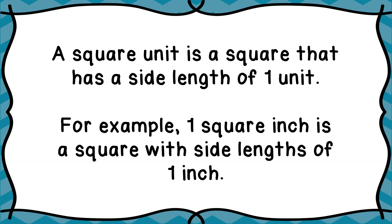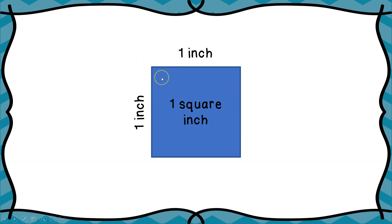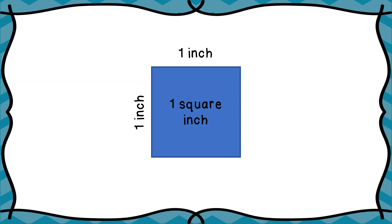Let me show you what that looks like. You see here — and obviously this is not to scale, this is not an actual inch — but we have a square here, and all four sides are one inch. So we call this area one square inch. If you remember in your classroom, if you've ever looked at the floor tiles, those floor tiles are typically about one foot on each side, so we would say those tiles are one square foot.